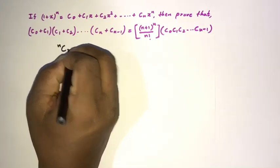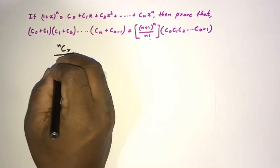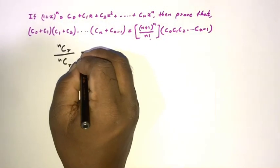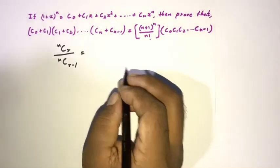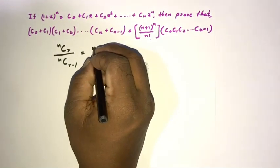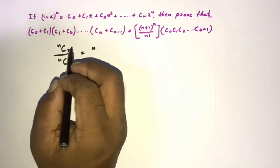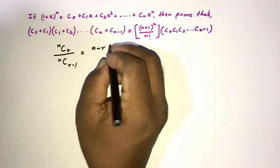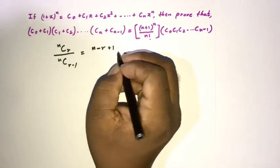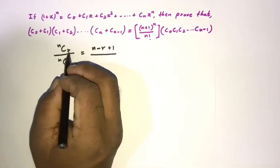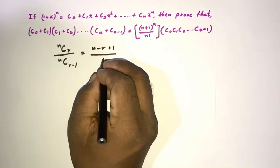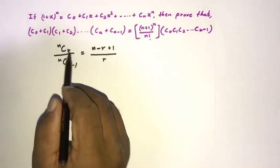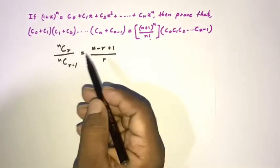If we have n choose r over n choose r minus one, we can simplify it. Here in the numerator we get n minus r, then add one, and divide by r. So the formula gives us (n - r + 1) / r.